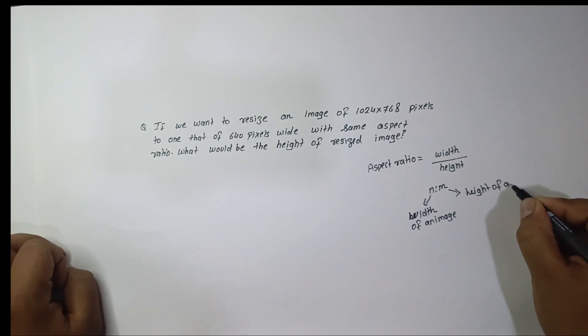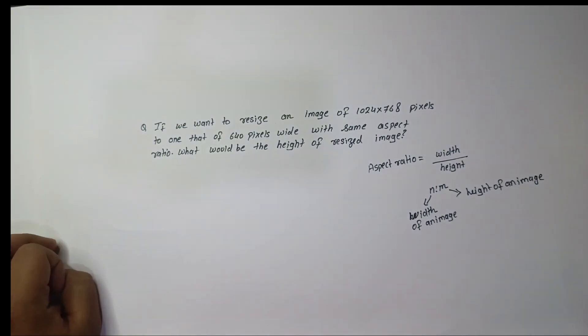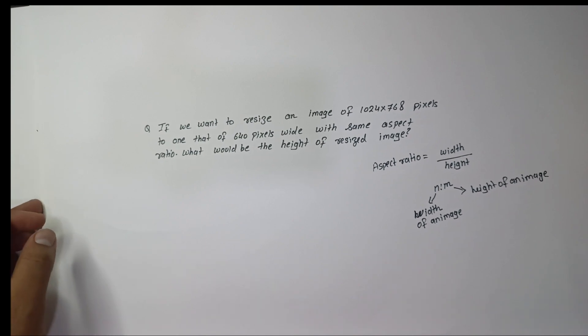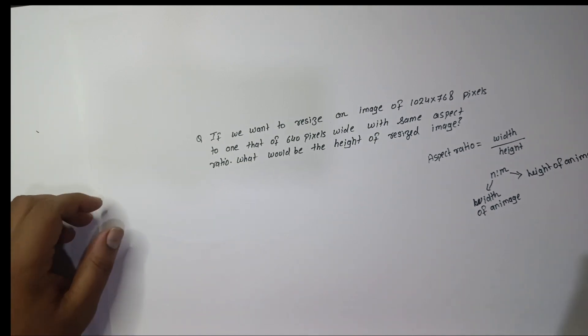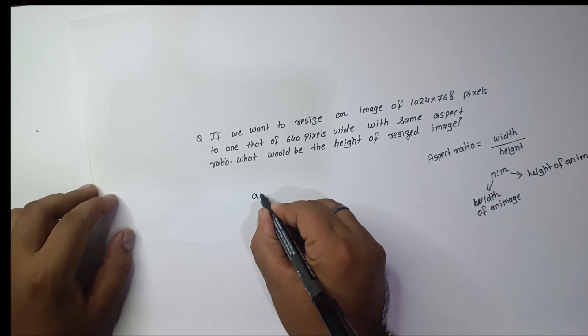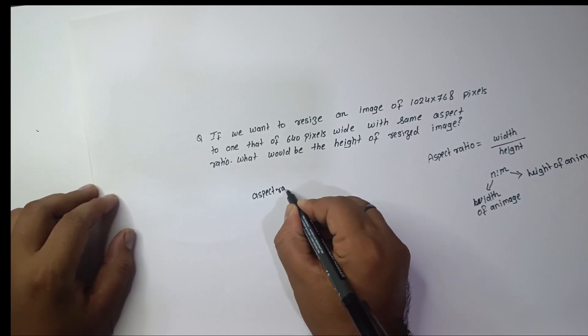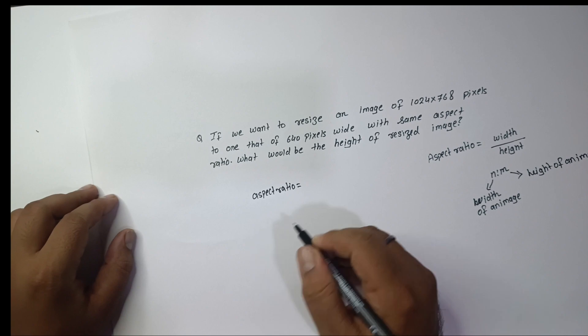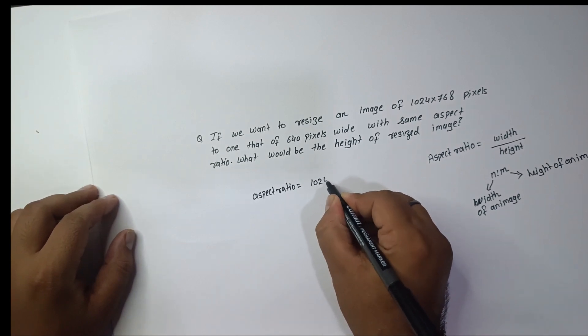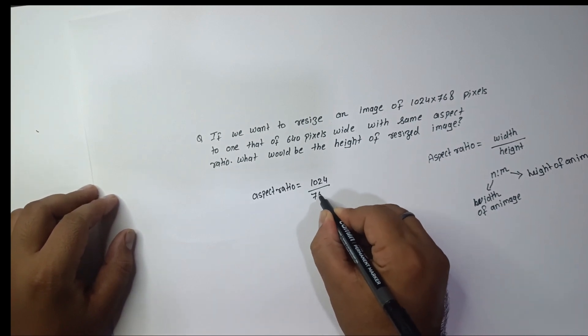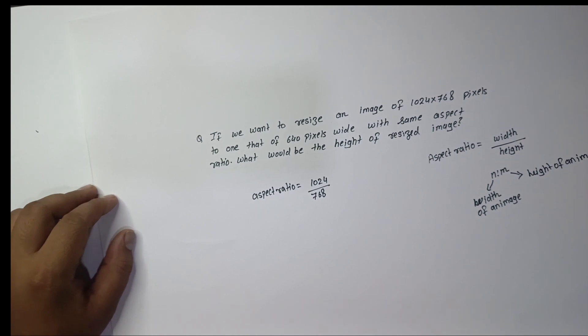Here in this question, the aspect ratio of the original image is 1024 divided by 768, and we have to calculate the height of the resized image keeping the aspect ratio the same.